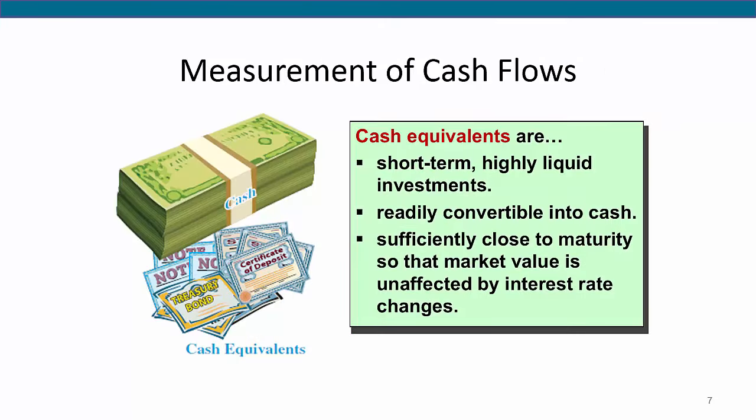Cash reported on the balance sheet includes currency and cash equivalents. Recall from a previous chapter that cash equivalents are short-term, highly liquid investments that are easily converted into cash and have very little risk of loss. An example would be a short-term treasury bill that is government issued, is very close to maturity, and has very little risk associated with it.